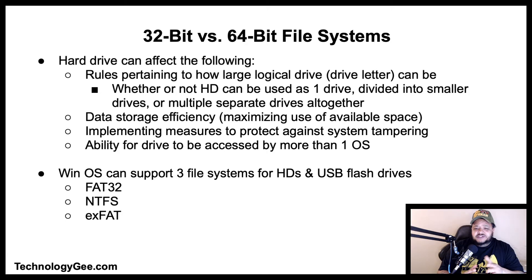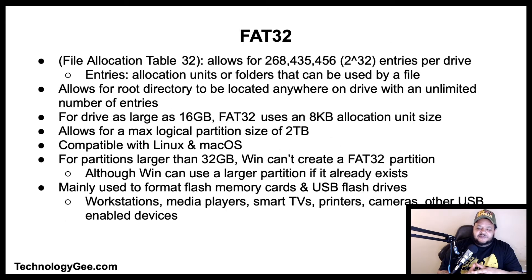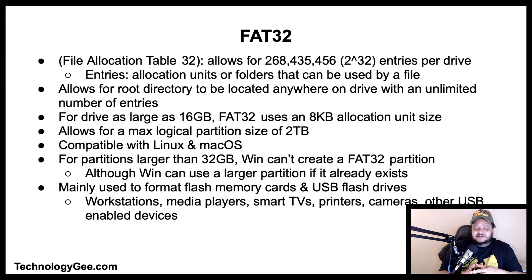Let's talk about FAT32. FAT32 stands for File Allocation Table 32 and is the 32-bit version of the FAT file system. FAT32 format was employed on Windows PCs in 1995, prior to the NTFS file system. FAT32 is widely used for USB drives, flash memory cards, and external hard drives for compatibility between all platforms. It has a 32-bit file allocation table that allows for 268 million, 435 thousand, 456 entries per drive — entries being allocation units or folders that can be used by a file. FAT32 allows for the root directory to be located anywhere on the drive with an unlimited number of entries.